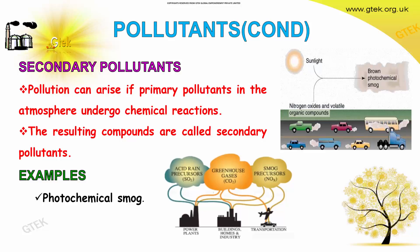What are secondary pollutants? Pollution can arise if primary pollutants in the atmosphere undergo chemical reactions. The resulting compounds are called secondary pollutants. A typical example is photochemical smog.